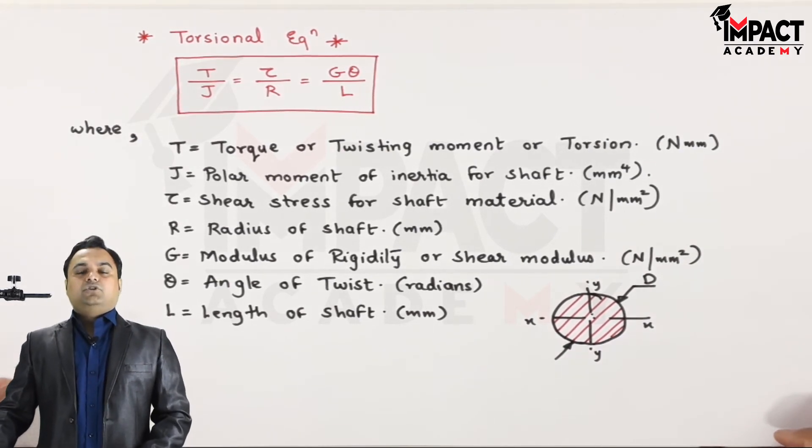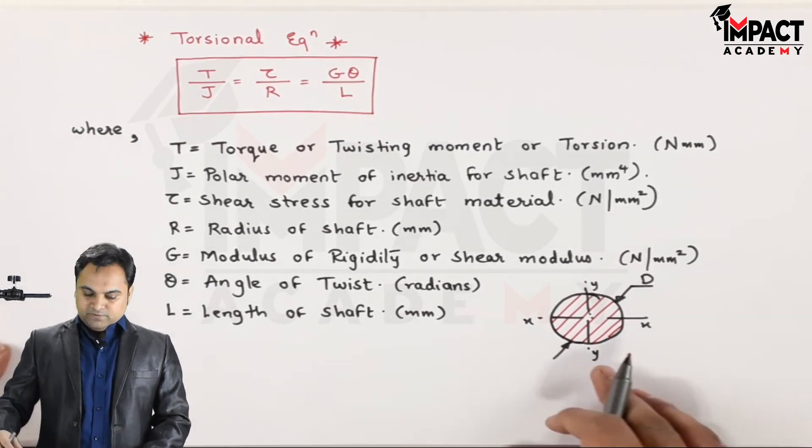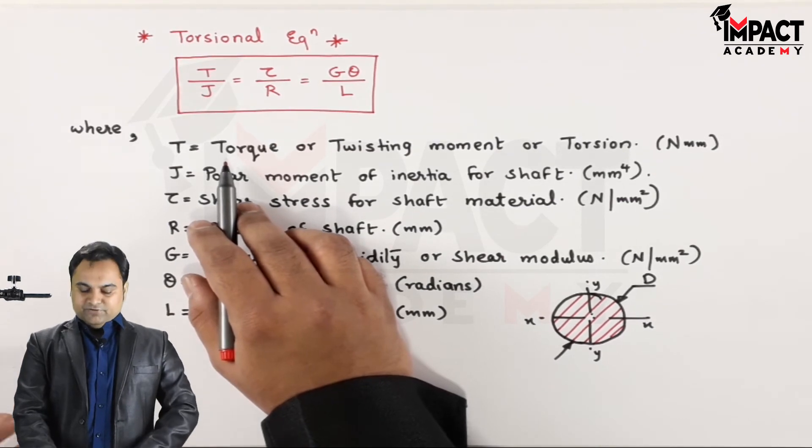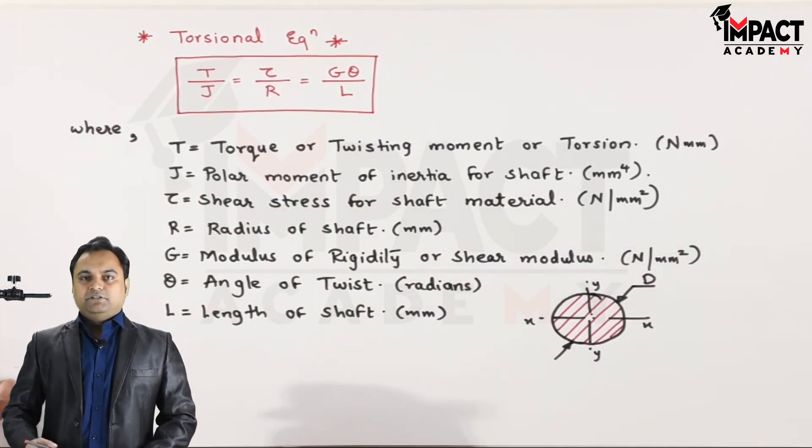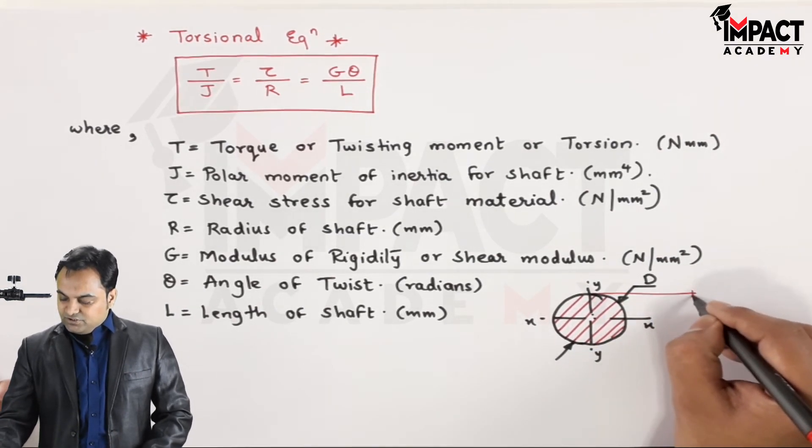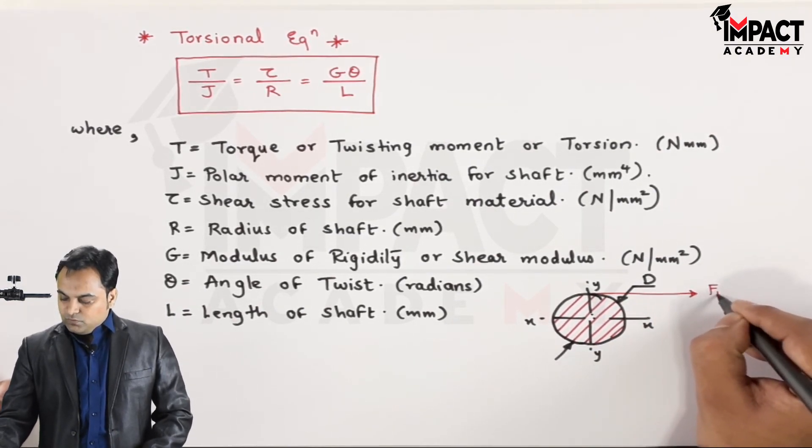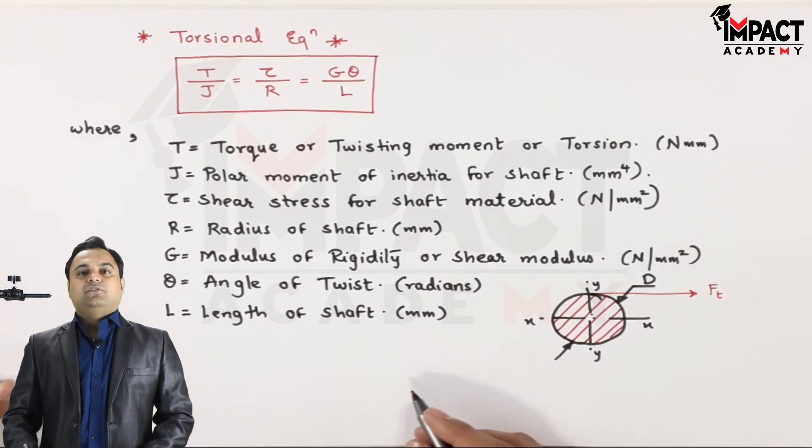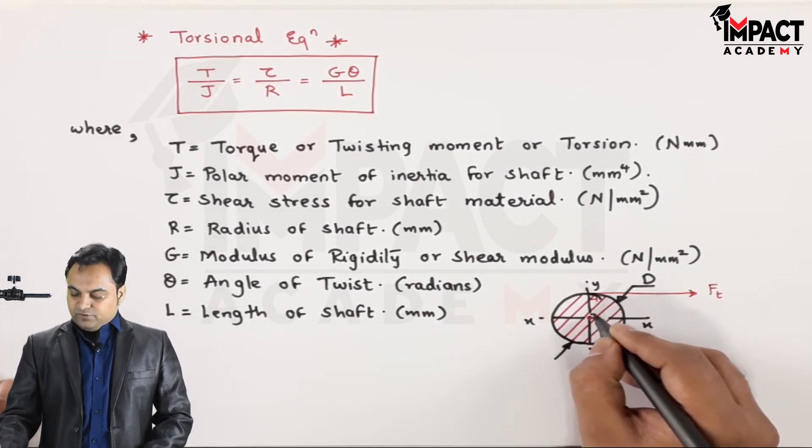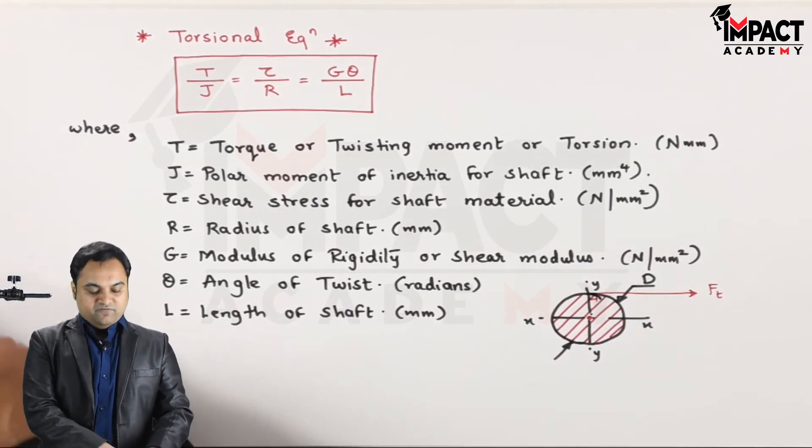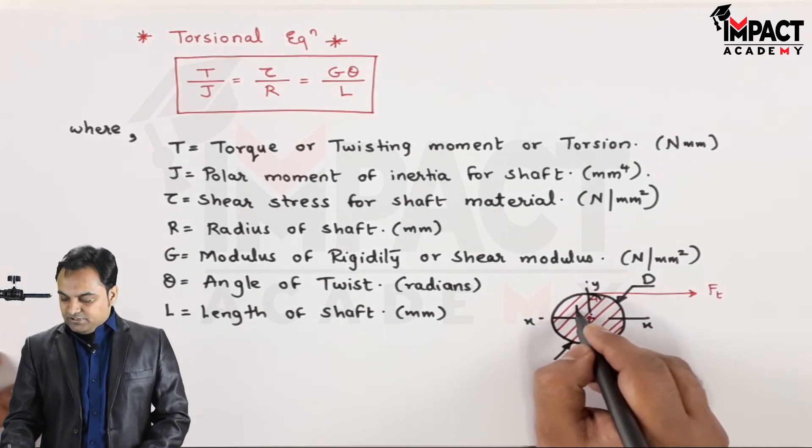Now this is the cross-section of the solid circular shaft, and as I had written, T is torque or twisting moment. That twisting moment may be defined as the tangential force which is acting on the circumference of this shaft multiplied by the radius of the shaft.